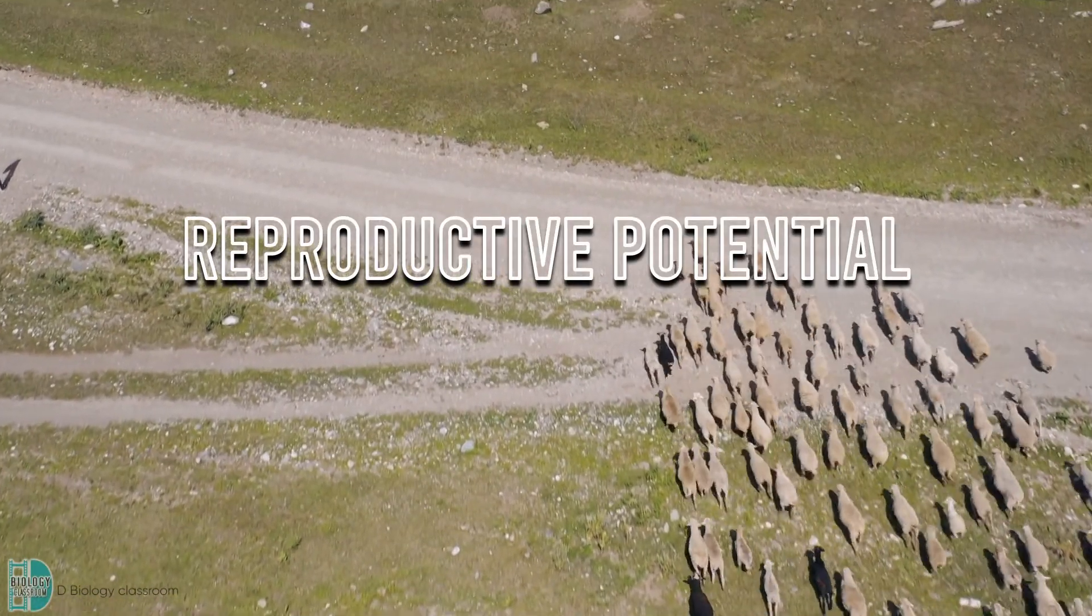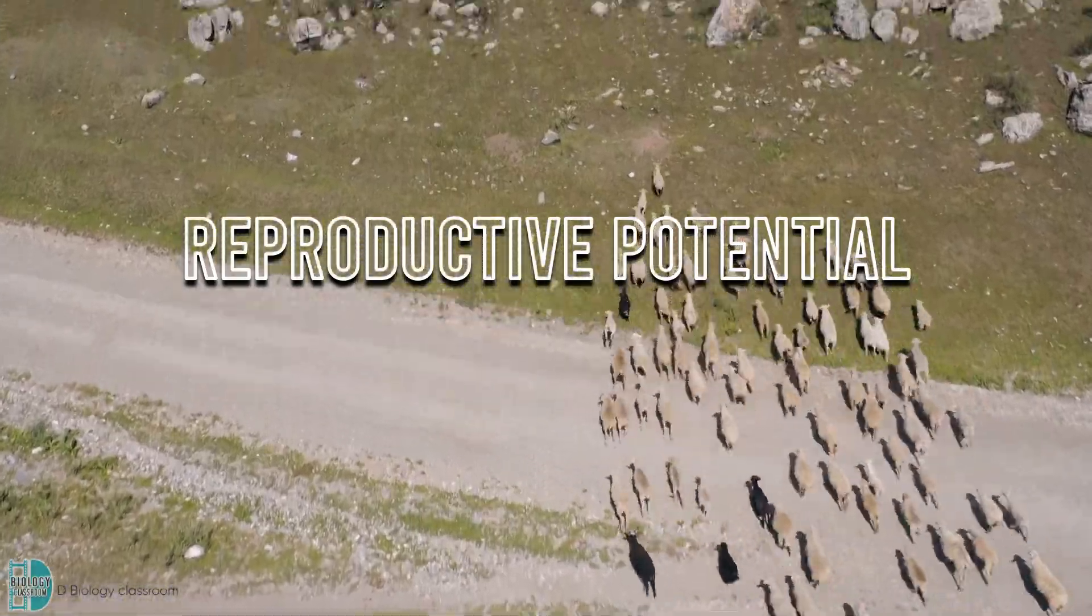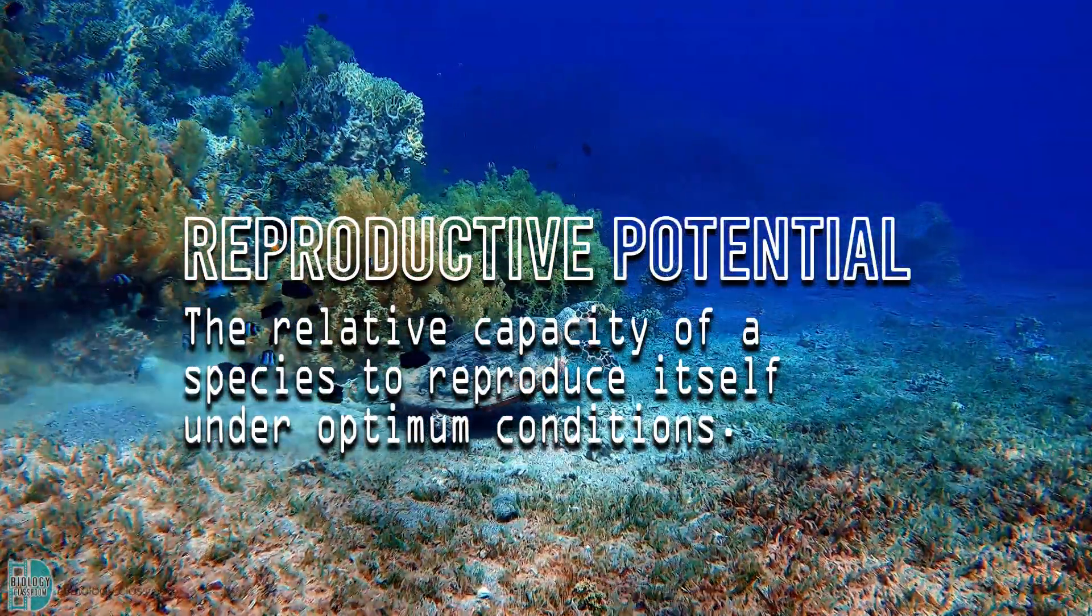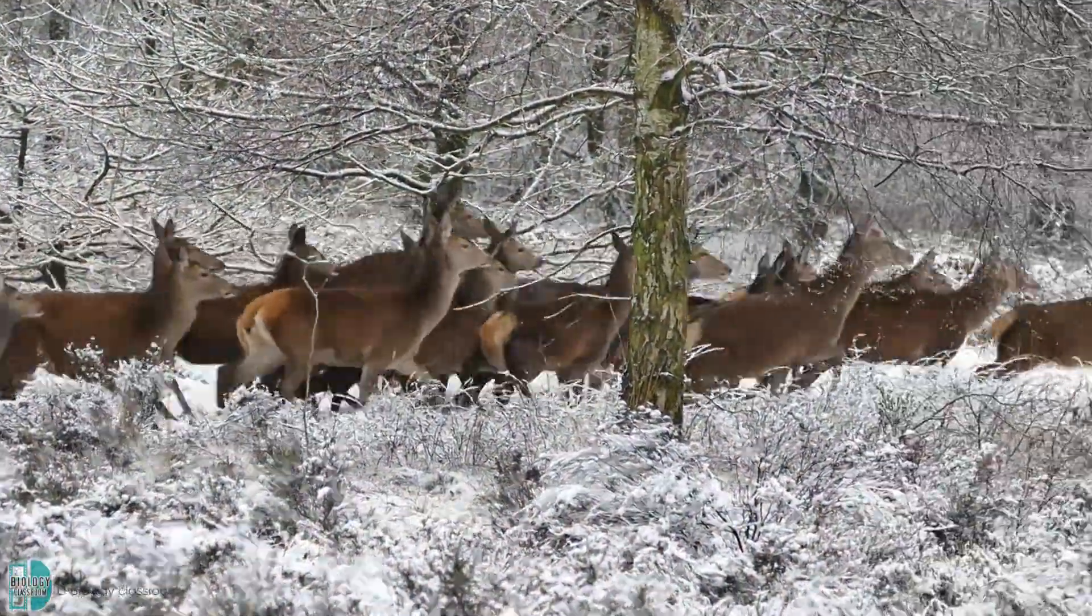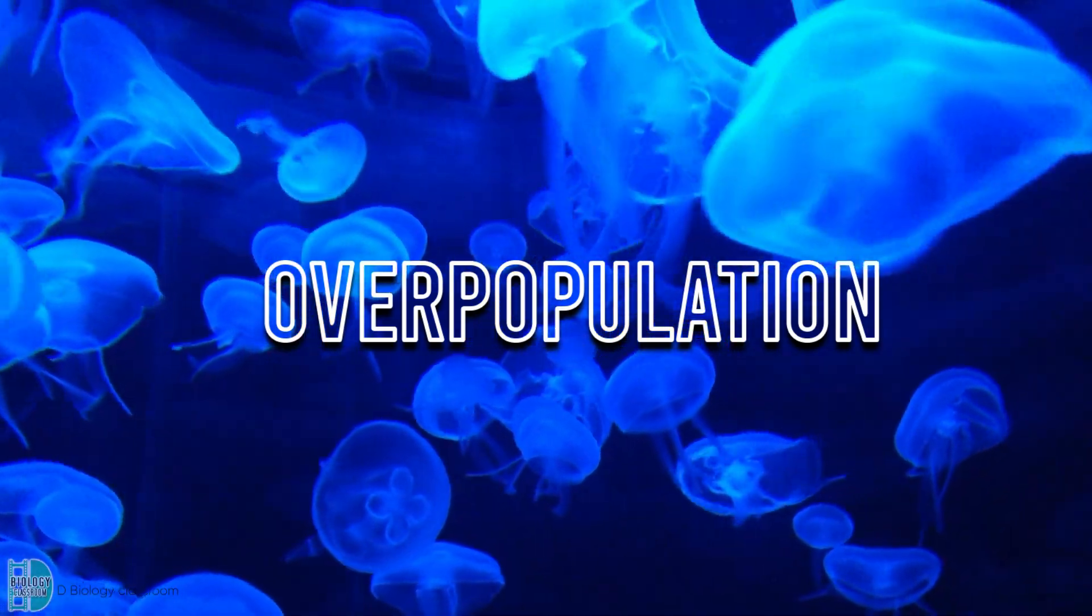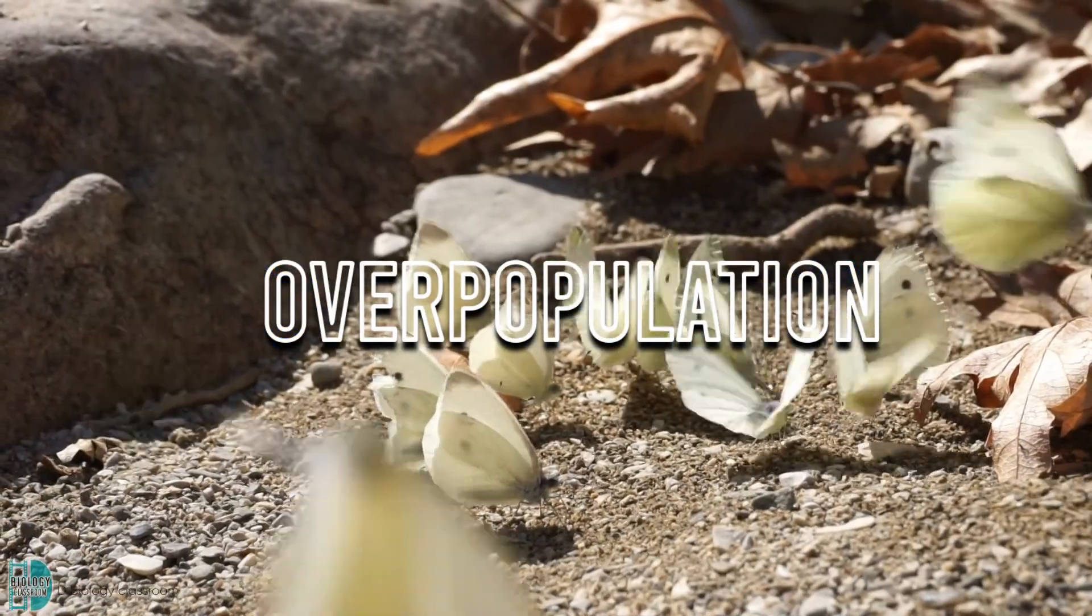All organisms have reproductive potential. It is the relative capacity of a species to reproduce itself under optimum conditions. Because of this potential, a species can become overpopulated, provided the factors required for its growth are fulfilled.